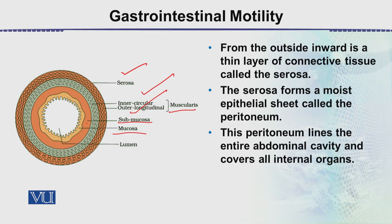From the outside inward, there is a thin layer of connective tissue called the serosa. The serosa forms a moist epithelial sheet called the peritoneum. This peritoneum lines not only the intestinal covering but also the body cavity. It lines the entire abdominal cavity and covers all the internal organs, which we call the viscera.